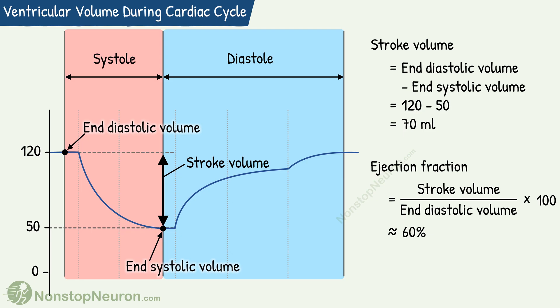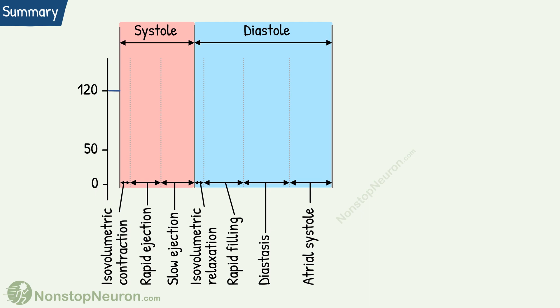So this was all about ventricular volume during a cardiac cycle. Here is a quick summary: During isovolumetric contraction, there is no change in ventricular volume. During rapid ejection, there is a rapid fall, and during slow ejection, this fall becomes less rapid. During isovolumetric relaxation, there is no change. During rapid ventricular filling, there is a rapid rise. Then during diastasis, the rise gets slower. Atrial systole increases the ventricular volume.